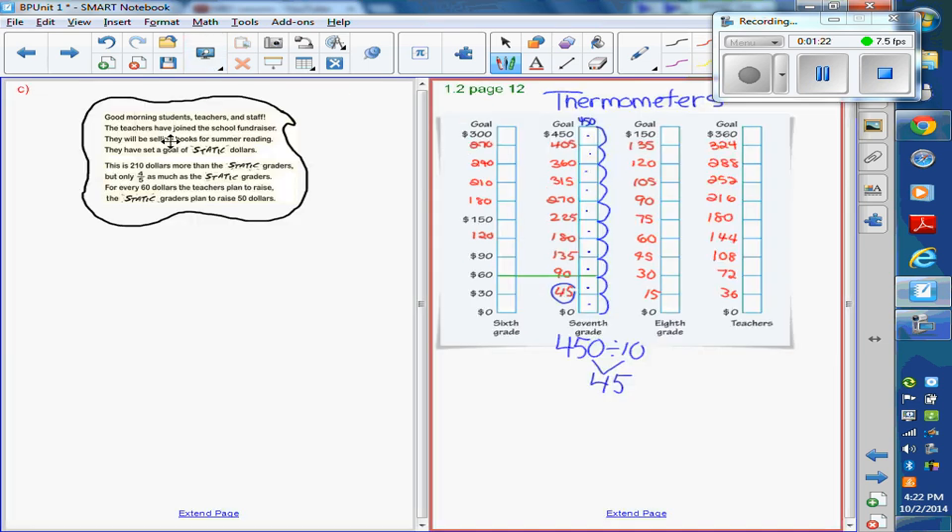Then we had to make claims using these thermometers. On the next page, Ben made a claim and his claim said that for every $60 that the 6th graders made, the 7th graders made $90. And in class,